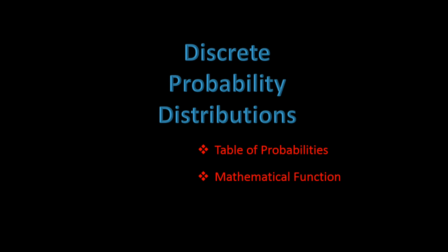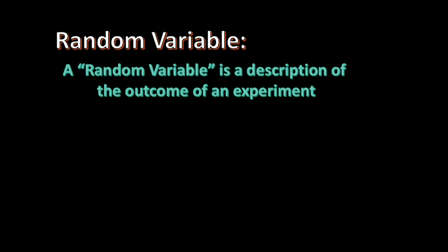The second type of discrete probability distribution we will discuss uses a mathematical function to compute probabilities. Before we move on to our discussion about discrete probability distributions, we must first define the term random variable. A random variable is a description of the outcome of an experiment. There are two types of random variables we are concerned with: discrete random variables and continuous random variables. In this tutorial, we will be concerned only with discrete variables.